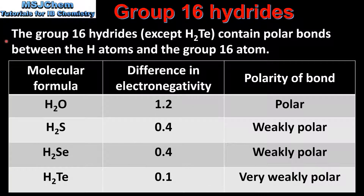The group 16 hydrides except for H2Te contain polar bonds between the hydrogen atoms and the group 16 atom. In this table we can see the difference in electronegativity between the hydrogen atom and the group 16 atom. For H2O the difference is 1.2 units. For H2S and H2Se the difference is 0.4 units, and for H2Te the difference is 0.1 units. The O–H bond can be considered a polar bond, H2S and H2Se bonds are weakly polar, and the H2Te bond is very weakly polar due to the very small difference in electronegativity.